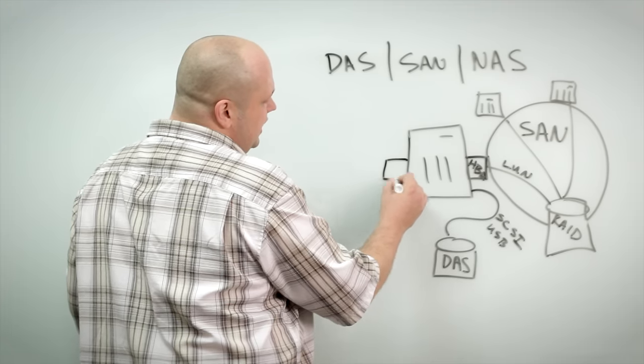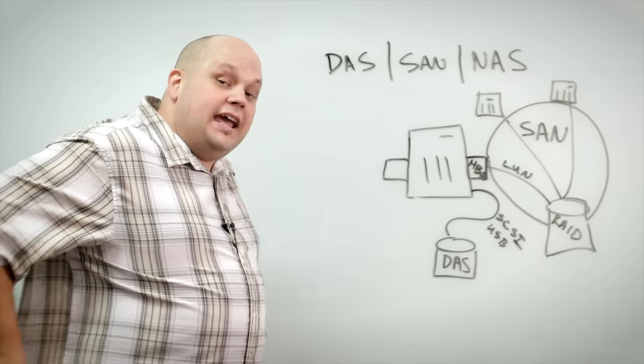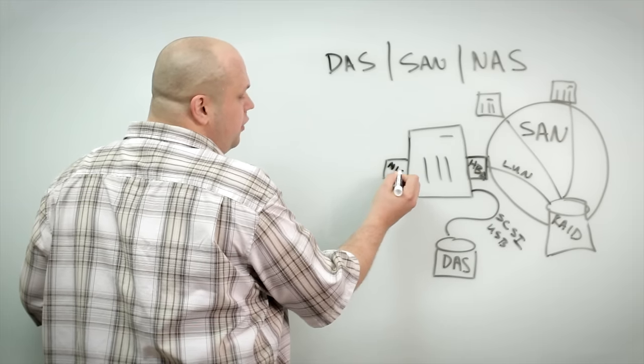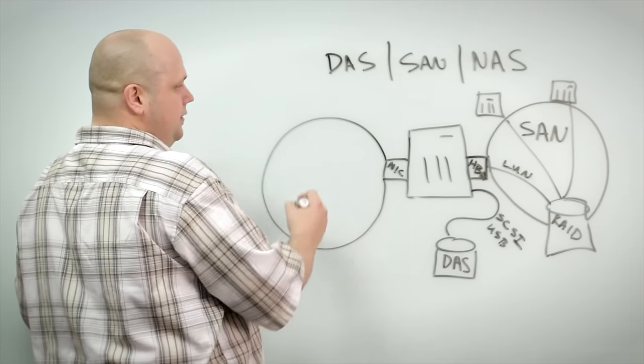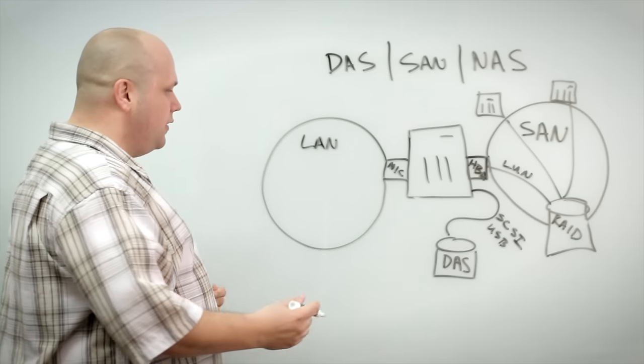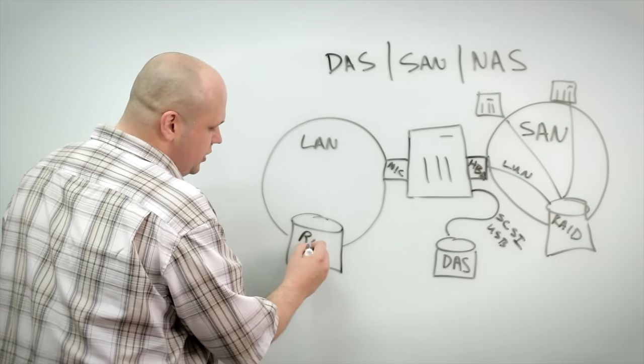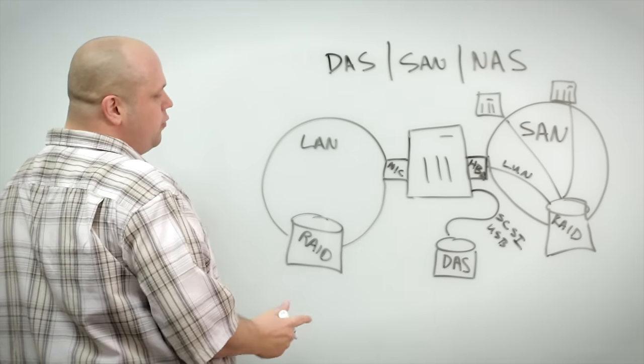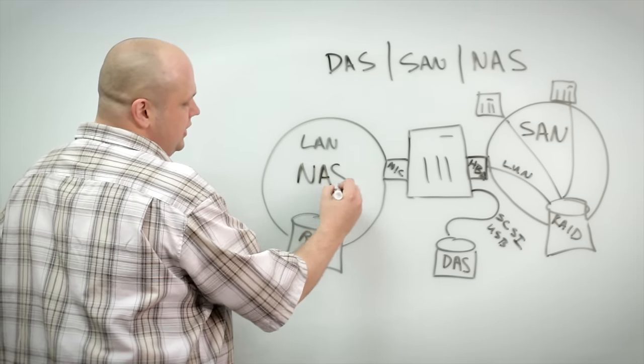And what folks have done is they've taken a look at the fact that they already have a highly available network that they've been using for data, for voice, for internet access for a number of years. And so what they've decided to do is to converge the storage area network into an existing LAN. And within that existing LAN space, what we've decided to do is to still attach a large, highly available RAID solution, redundant array of independent disks. But this is made available via our network, our existing LAN network. So this is what we refer to when we describe network attached storage.